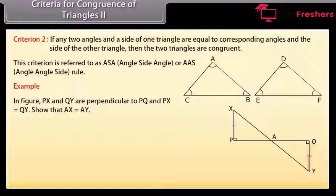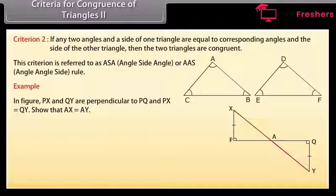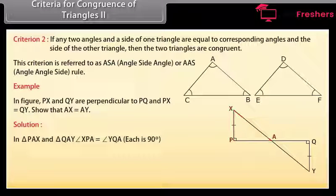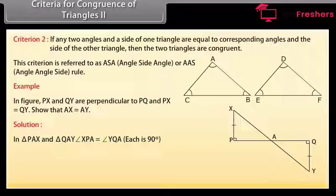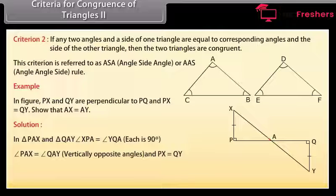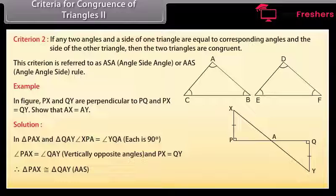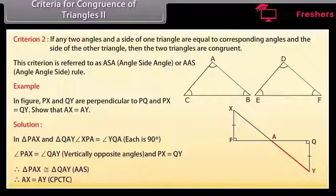Example: In the figure, PX and QY are perpendicular to PQ, and PX equals QY. Show that AX equals AY. Solution: In triangle PAX and triangle QAY — angle XPA equals angle YQA because each is 90 degrees; angle PAX equals angle QAY because these are vertically opposite angles; and PX equals QY. Therefore by AAS congruence rule, triangle PAX is congruent to triangle QAY, and hence AX equals AY by CPCTC.